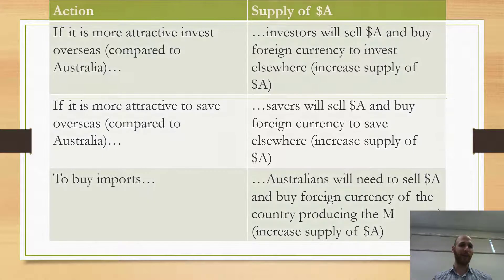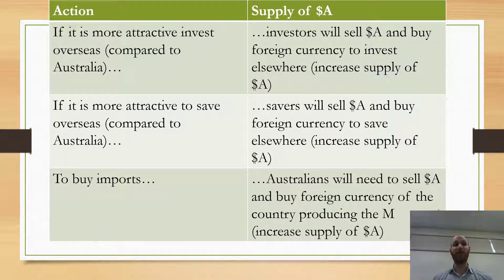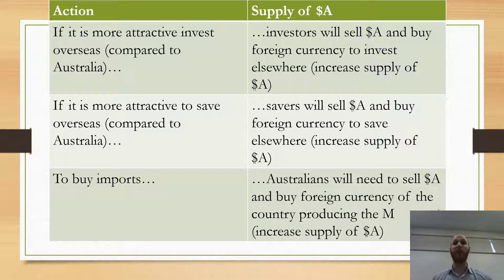Let's think about the supply side. If it is more attractive to invest overseas compared to Australia, then investors will sell their Australian dollars and buy foreign currency to invest elsewhere. If investors sell Australian dollars, that will increase the supply of Australian dollars.